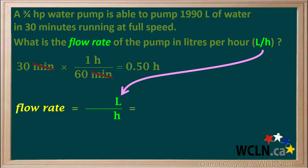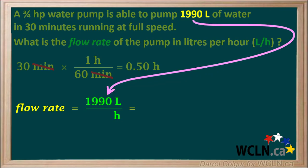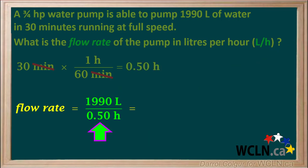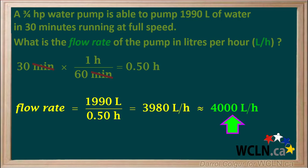We want the flow rate in liters per hour, so to calculate it we take the volume in liters divided by the time in hours. We are able to pump 1,990 liters in 0.5 hours. So we calculate the flow rate by dividing 1,990 liters by 0.5 hours, giving us 3,980 liters per hour, or approximately 4,000 liters per hour.